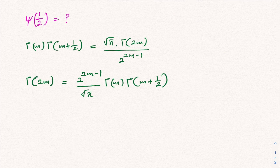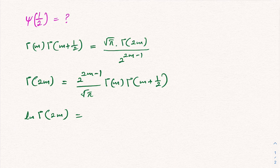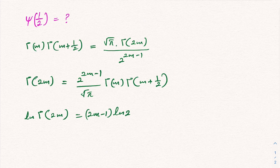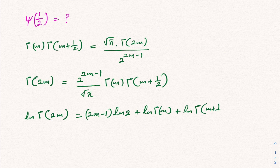Then I am going to apply the natural log to both sides. So we have the natural log of gamma of 2m equal to: according to properties of natural log, we can expand the right-hand side as (2m minus 1) times natural log of 2, plus natural log of gamma of m, plus natural log of gamma of m plus one half, minus one half times natural log of pi.